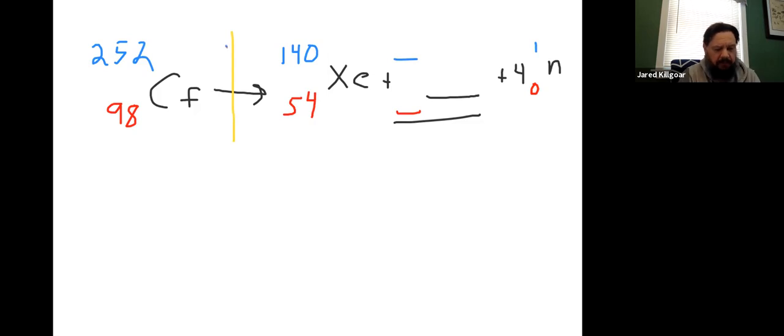So, the equation up at the top, your total mass on the left side is 252. So, your mass on the right side also has to add up to 252. So, you have 252 is equal to 140 plus blank plus 4. These four neutrons have a total mass of 4. So, there's four of them, so that's why.